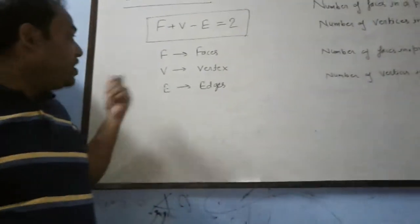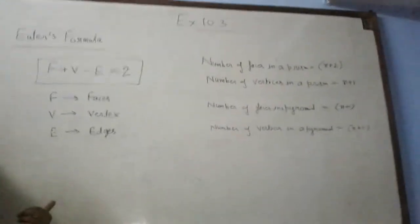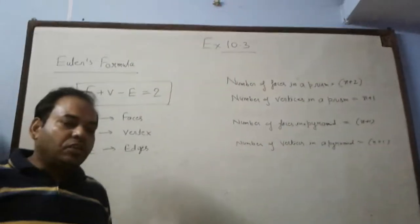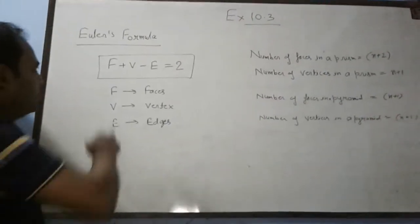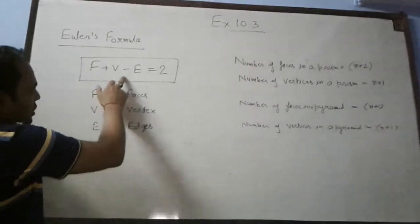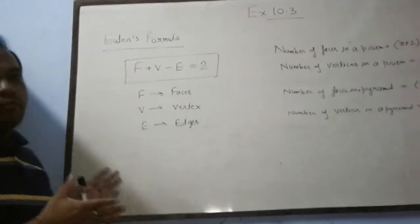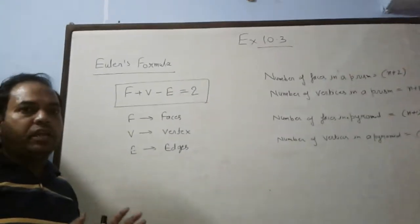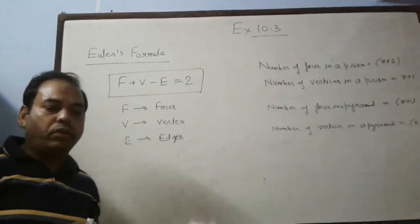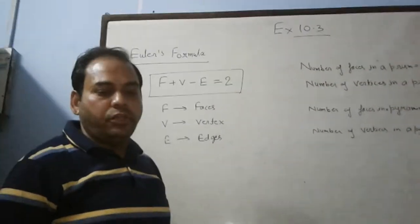How many faces and vertices? We put it in a row: F plus V minus E. If it comes to 2, which is given in a prism, which is polyhedron, we will ask a question.